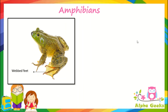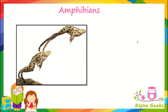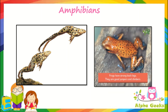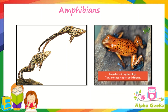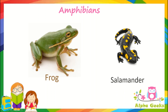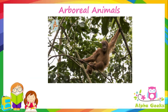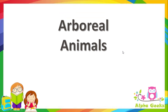Frogs have webbed feet which help them to swim in water. They have strong hind limbs for hopping and jumping when on land. They have legs to move from one place to another to find food, escape predators, find shelter, and return to water to find mates and lay eggs. Some examples of amphibians include frogs and salamanders.